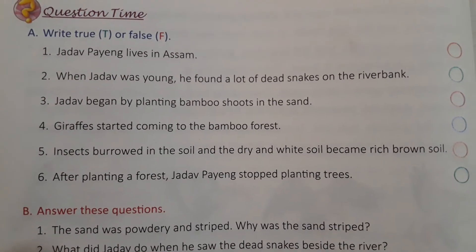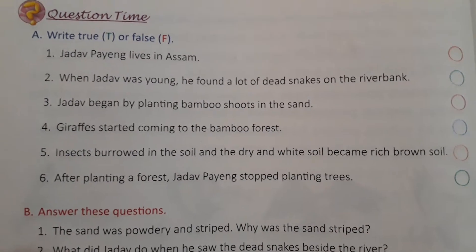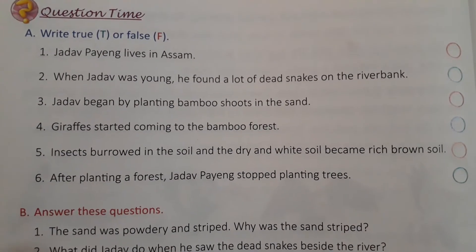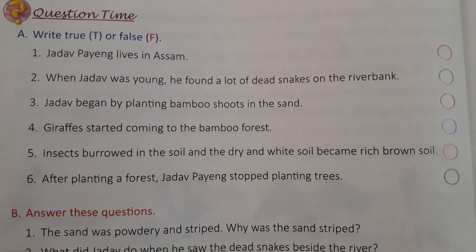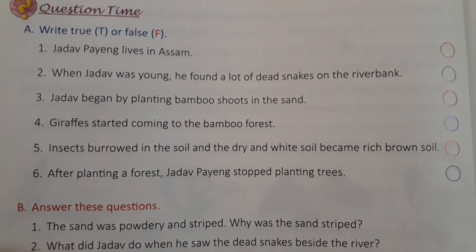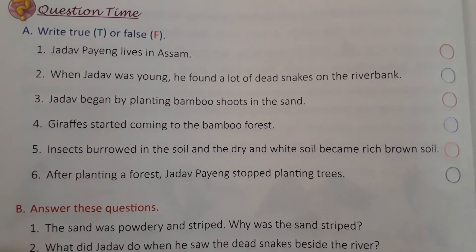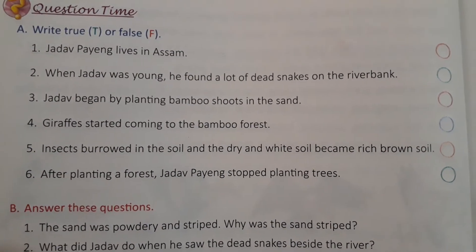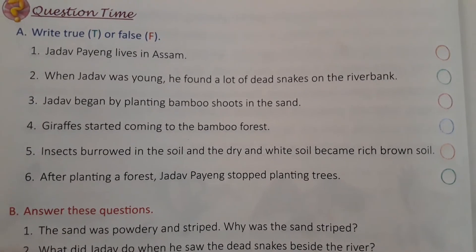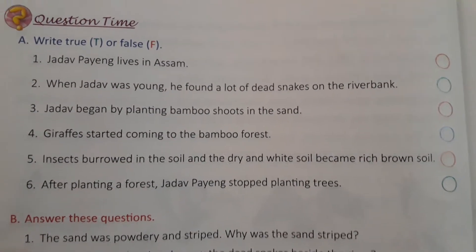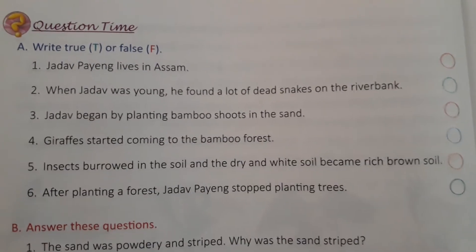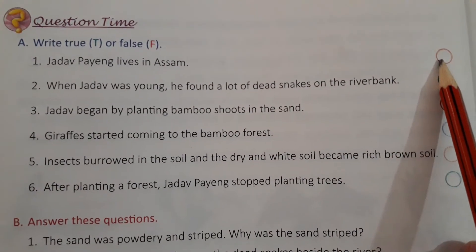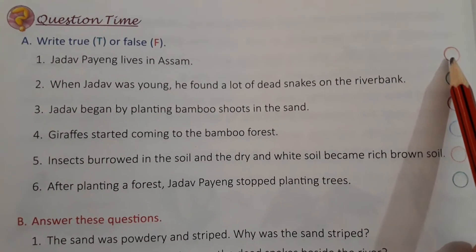First: Jadav Paheng lives in Assam. तो Jadav Paheng जो थे, वो Assam में रहते थे. True — this is true. तो आप लिखना True. T for true.